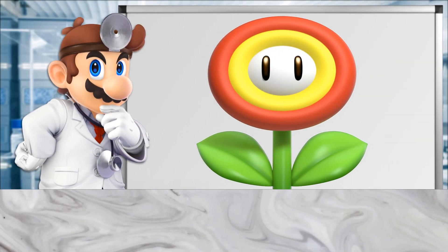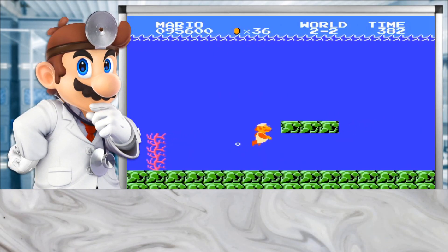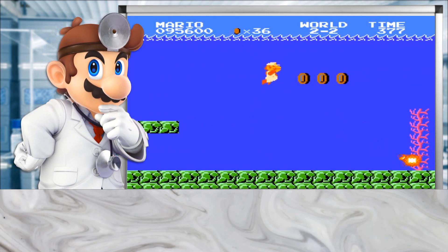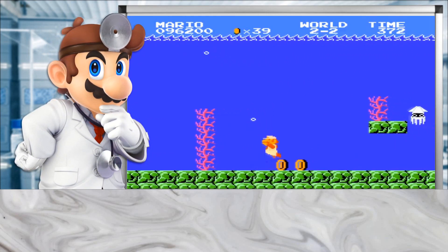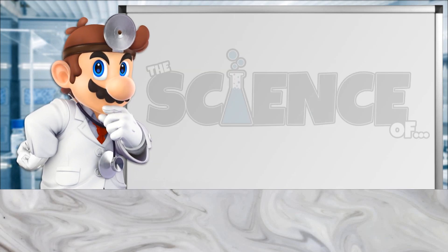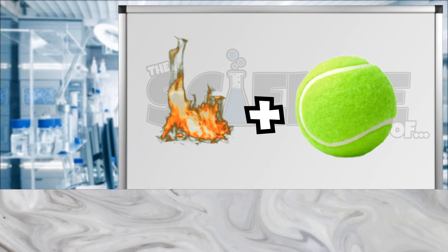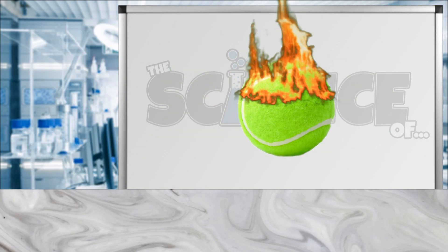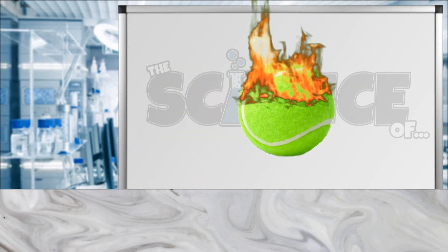But I've always wanted to know how this happens, especially underwater where by all accounts, Mario should be able to throw a flame as much as SpongeBob should be able to light a campfire in a coral reef. Today, we're going to take a look at the science behind the fire, the ball, and how this all comes together to make one of the most iconic power-ups in gaming.